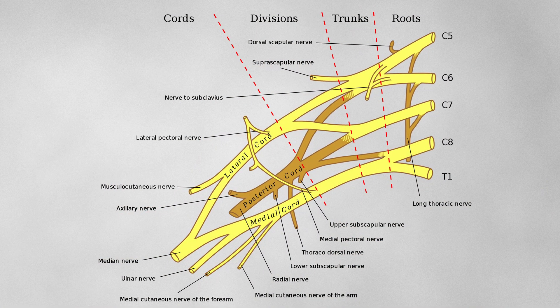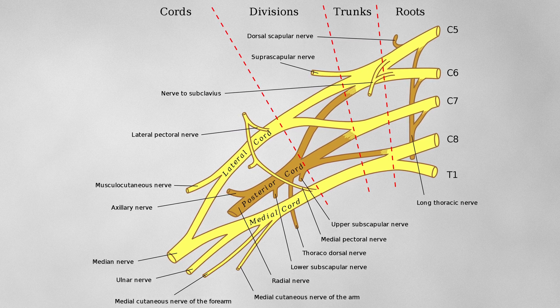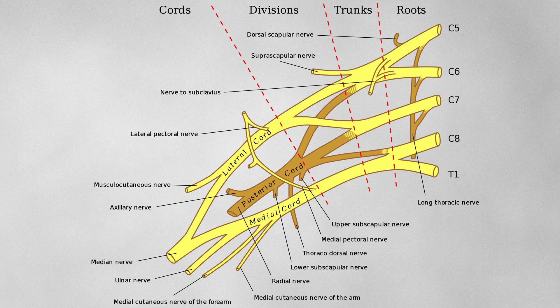So if we go back to our diagram of the brachial plexus, look at the C8 and T1 roots, see how they come together to form the trunk, follow that through and see the cord, and what are the major nerves being formed from those C8 and T1 roots? It's the ulnar nerve and the median nerve. The median nerve is most heavily affected by damage to C8 and T1 nerve roots. The ulnar nerve is also damaged to some extent.